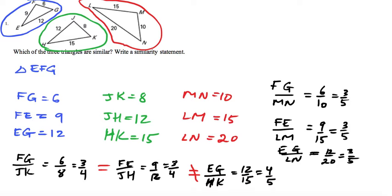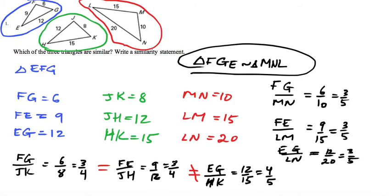So now we're going to write the similarity statement. It's triangle FGE is similar to triangle... And I have to be careful here. FG is the smallest length, so it has to match up with the other smallest length, which is MN. Now whether I write M first or N first depends on the next part. GE is the largest length, so I need to go from the smallest to the largest. So it has to be triangle MNL.